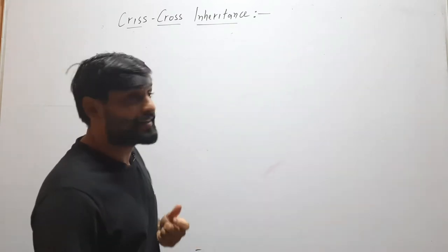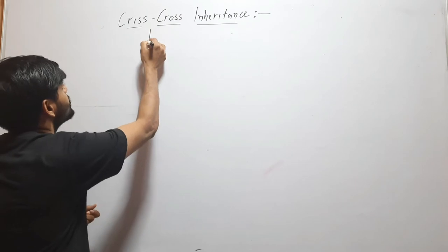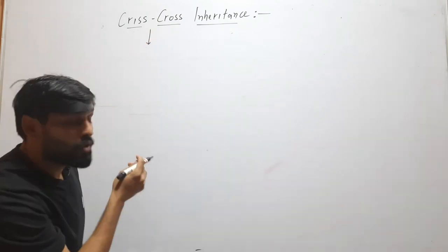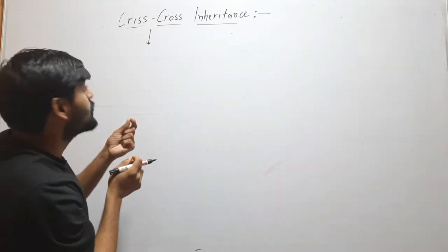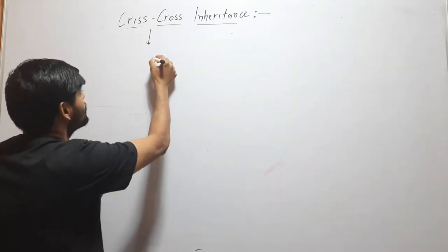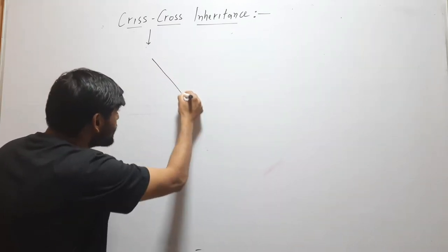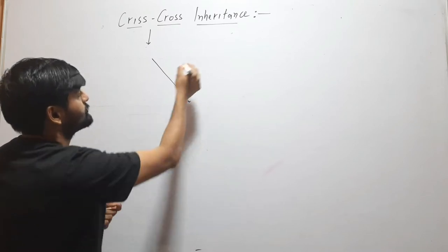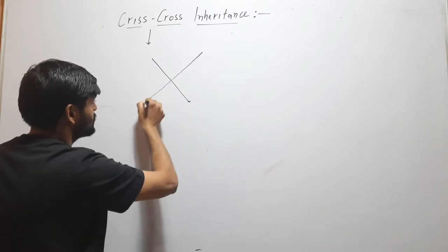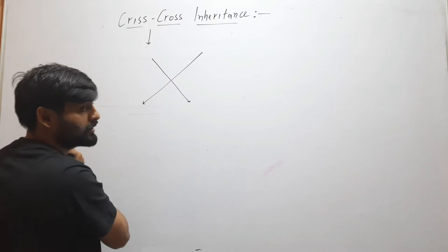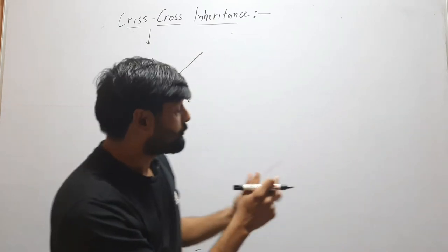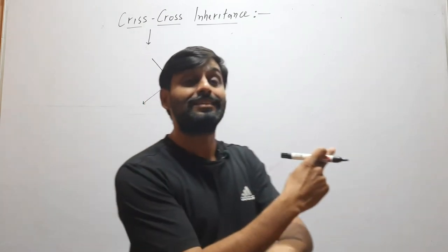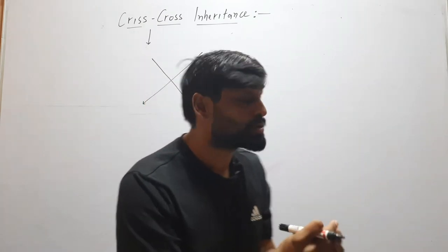What is Criss-Cross inheritance? First, let us know the meaning of the word Criss-Cross. Criss-Cross means an arrangement of two lines in which these lines cross each other. We can say that when two lines cross each other, then it is called Criss-Cross.